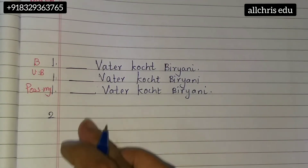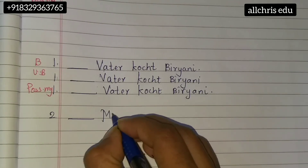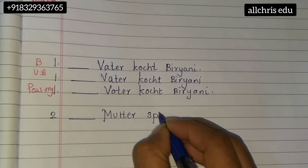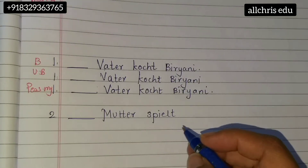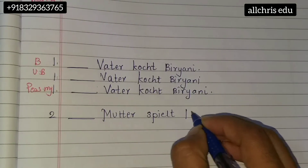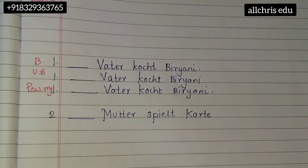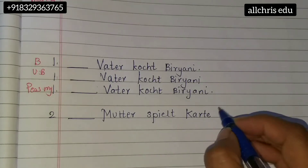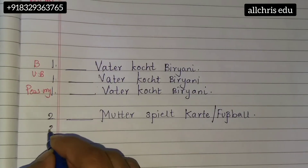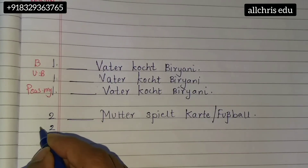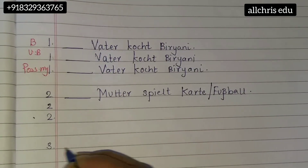I can give you one more example. Dash — Mutter — spielt. So, 'the mother is playing.' What can she play? Maybe cards — Kart. Mutter spielt Kart. So they are playing cards, or you can say Fußball, that is football. Write this sentence thrice: bestimmt, unbestimmt, and possessive.